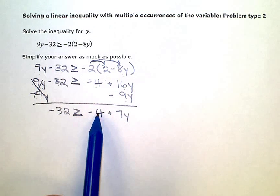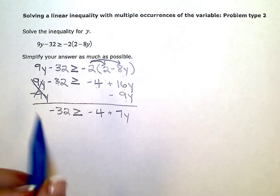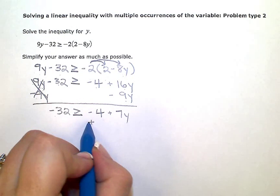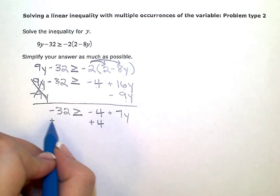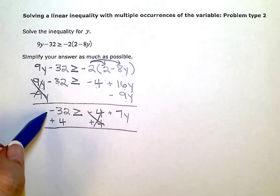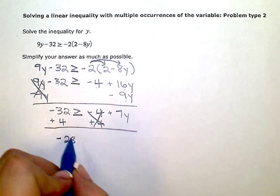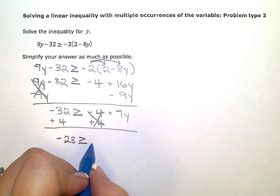Now I have constant terms on both sides of the inequality, so I'm going to zero out this negative 4 by adding 4 to both sides. When I simplify, negative 32 plus 4 is going to be negative 28 is greater than or equal to 7y.